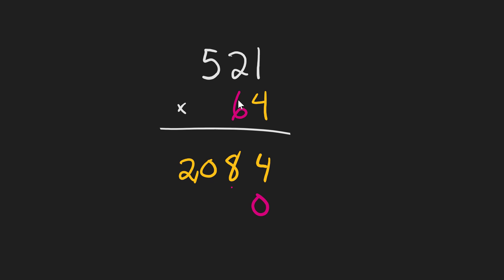1 times 6 is 6, and 2 times 6 is 12. So write down the 2, carry over the 1, and 5 times 6 is 30 plus 1 is 31. So 521 times 60 is 31,260.